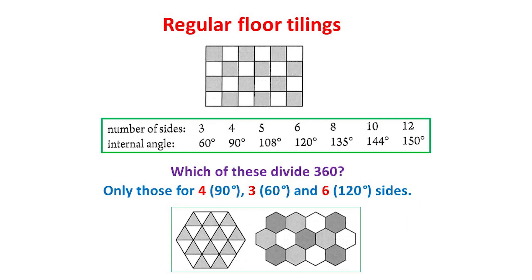We can use these results to investigate floor tilings made from regular polygons. We're all familiar with tilings of squares. Here, there are four right angles at each point where tiles meet, and the tiles fit because 90 degrees divides exactly into 360 degrees — clearly a necessary condition. From our table, we see that the only others are the 60 degrees for equilateral triangles and the 120 degrees for regular hexagons, and you can see the corresponding regular tilings below. All three tilings were known to the ancient Greeks. Around the year AD 300, the Greek mathematician Papus of Alexandria credited bees for selecting hexagonal arrangements for their honeycombs, because they hold more honey than either of the other two arrangements.